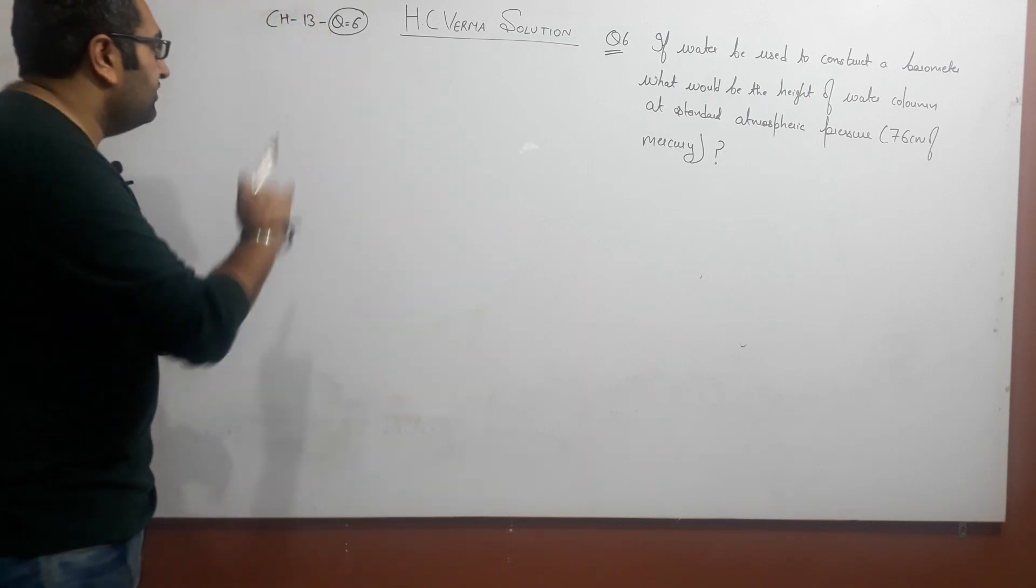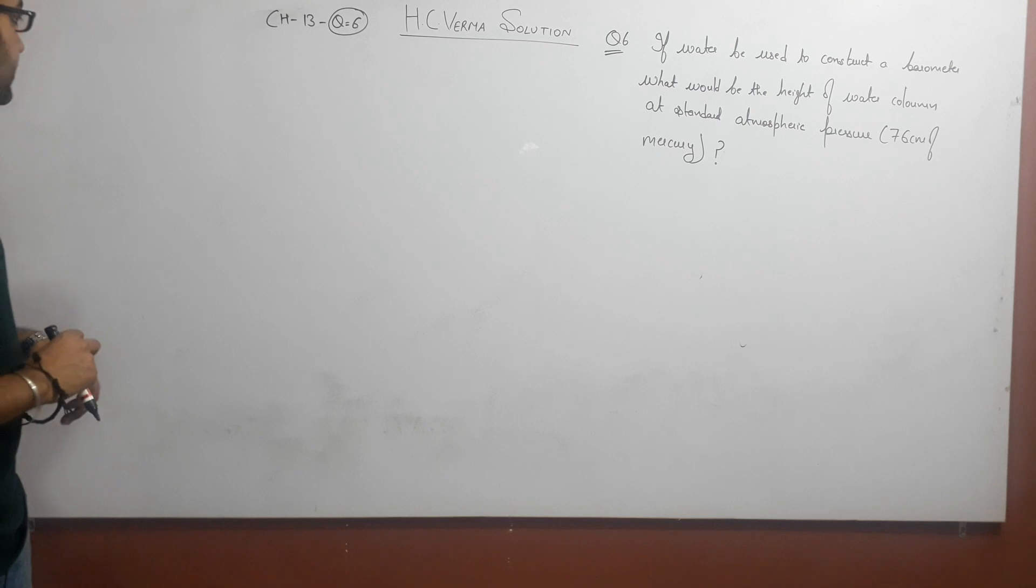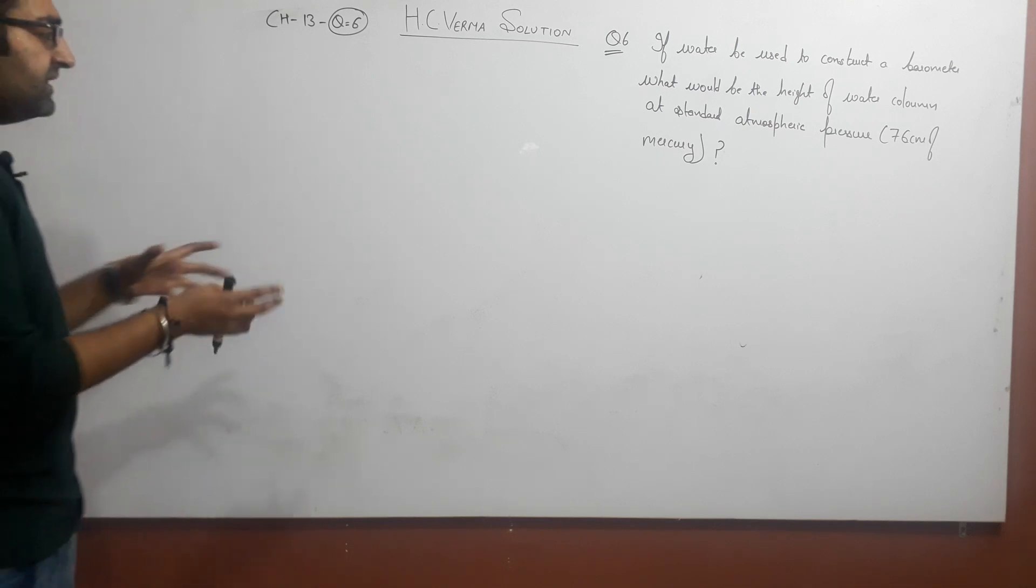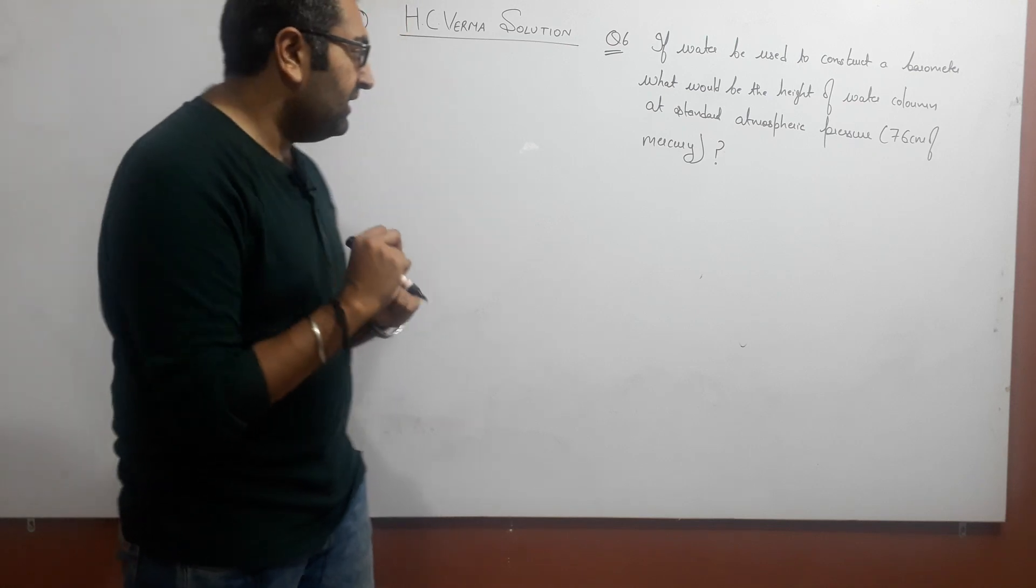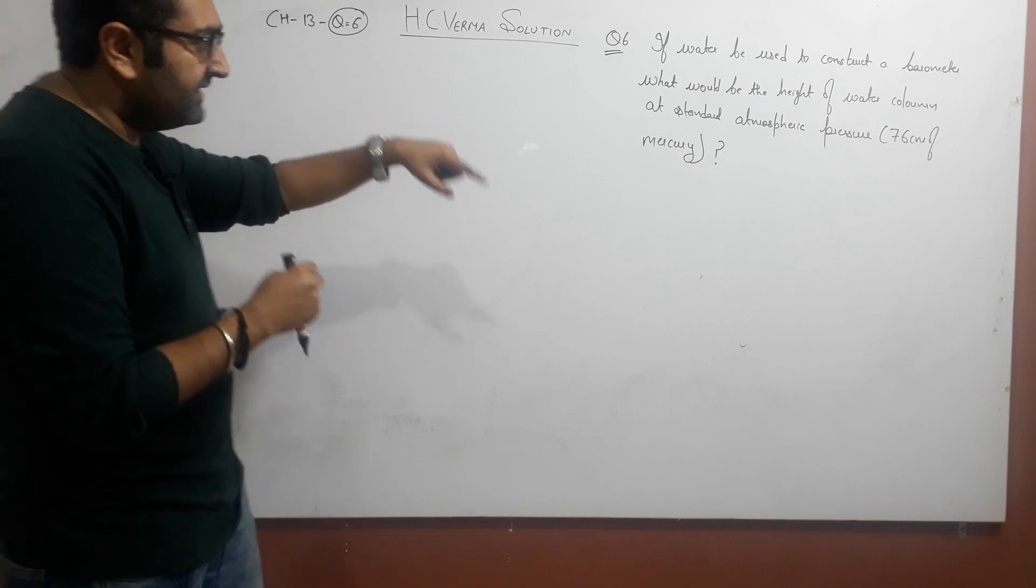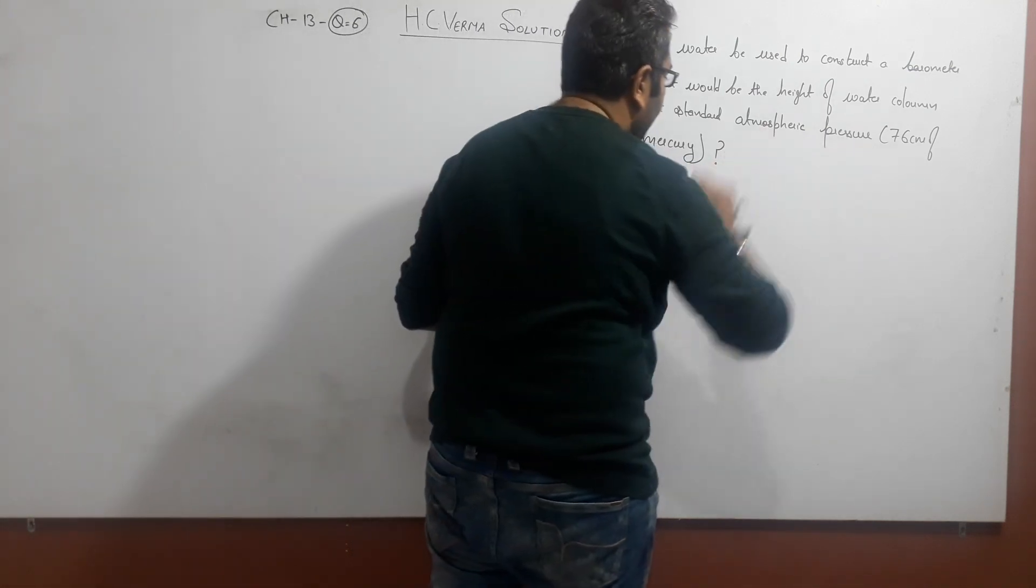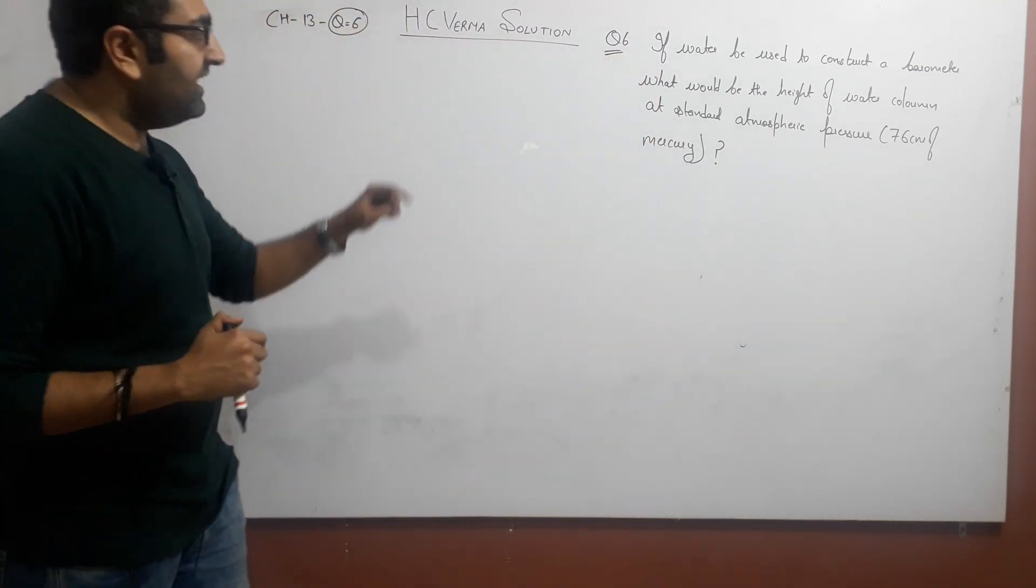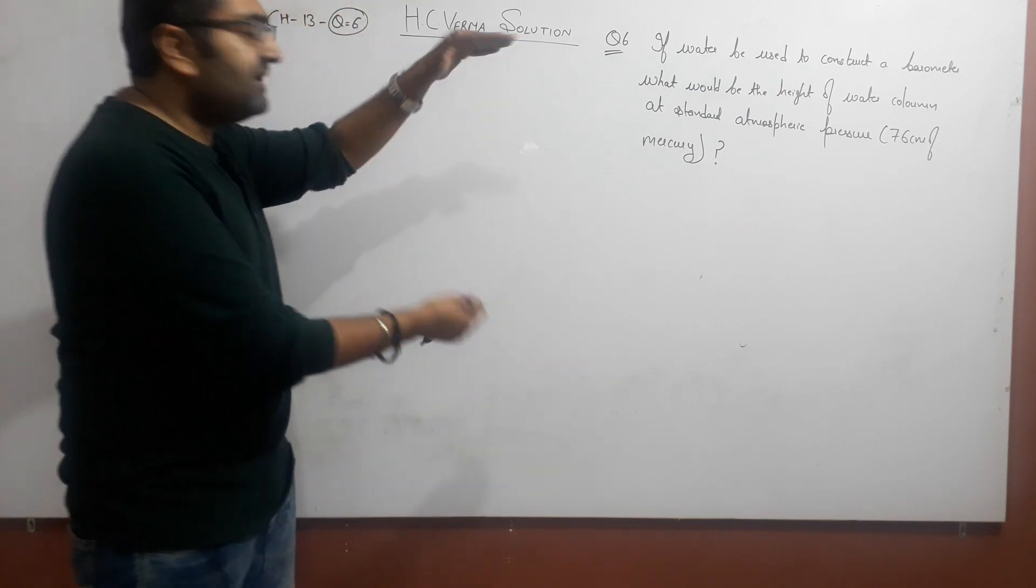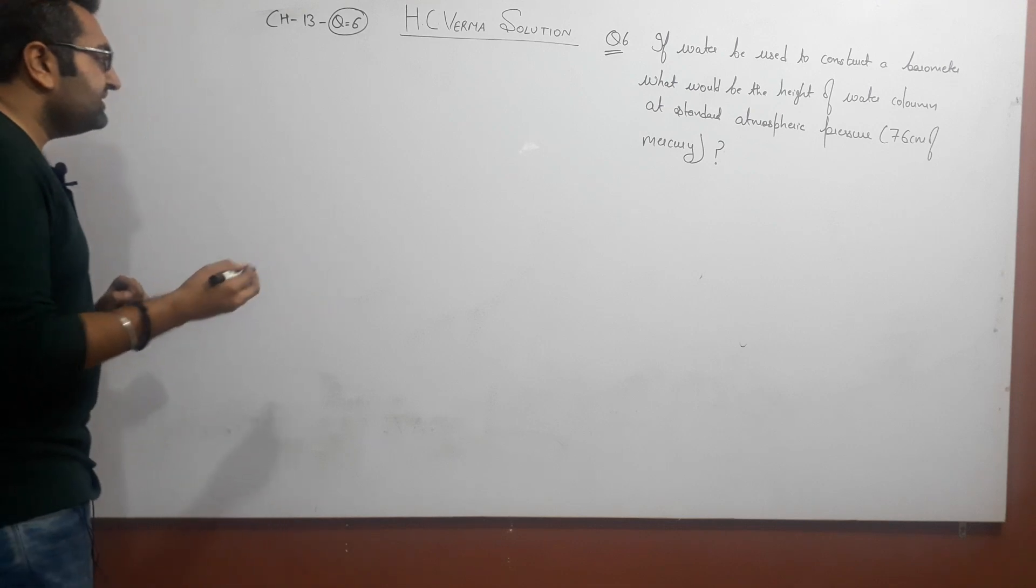Welcome guys, I am your mentor from Raghukul. This is fluid mechanics question number 6 of HC Verma book. The question is: if you have a barometer, what happens with water? When the atmospheric height of mercury is 76 centimeters, if we have water in the barometer, how much will the level rise?